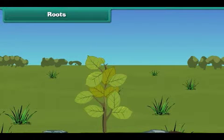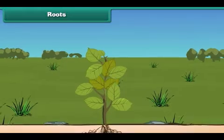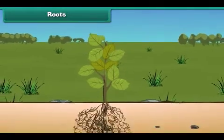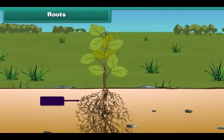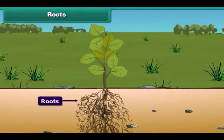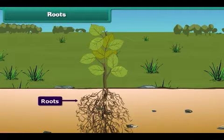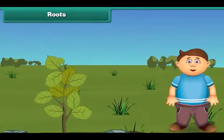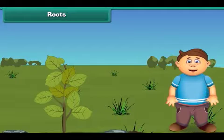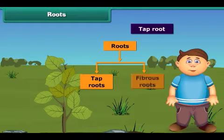Now let's know the parts of the plant in detail. Let's start with the root. The root is the non-green part of the plant which grows under the ground. There are mainly two types of roots: tap roots and fibrous roots.